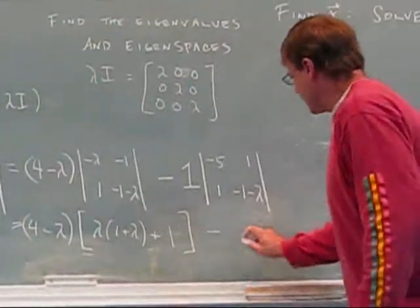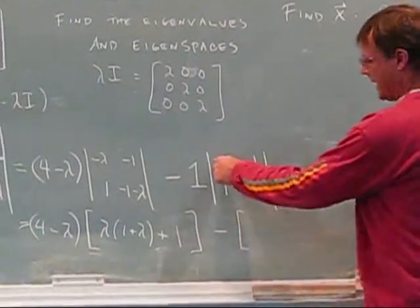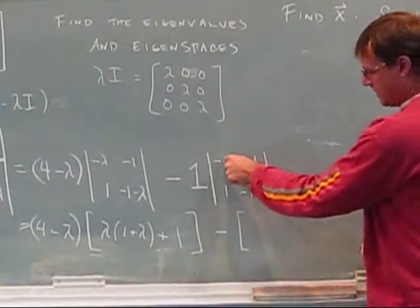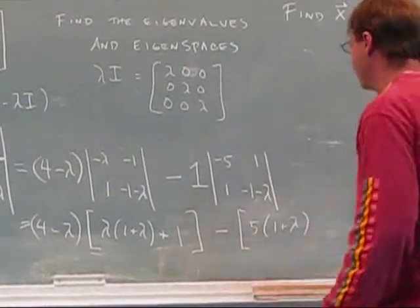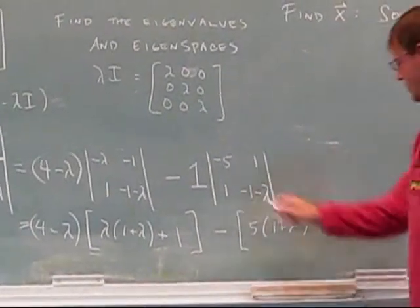Okay, then the next term is minus. Again, the negatives all cancel, so this is the same as 5 times 1 plus lambda minus 1.